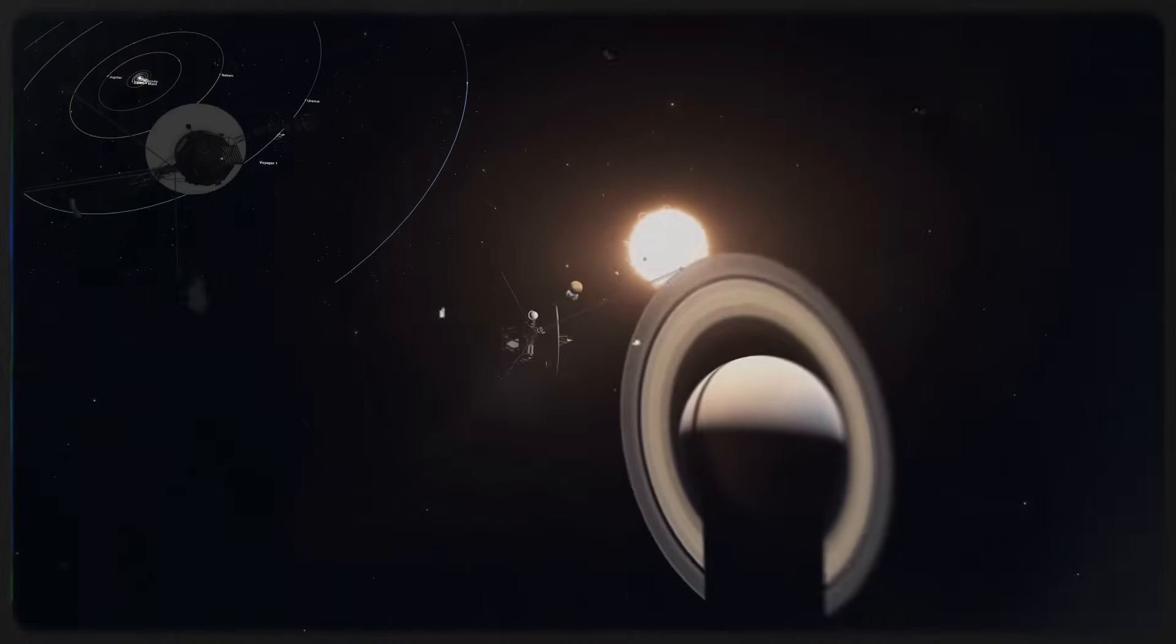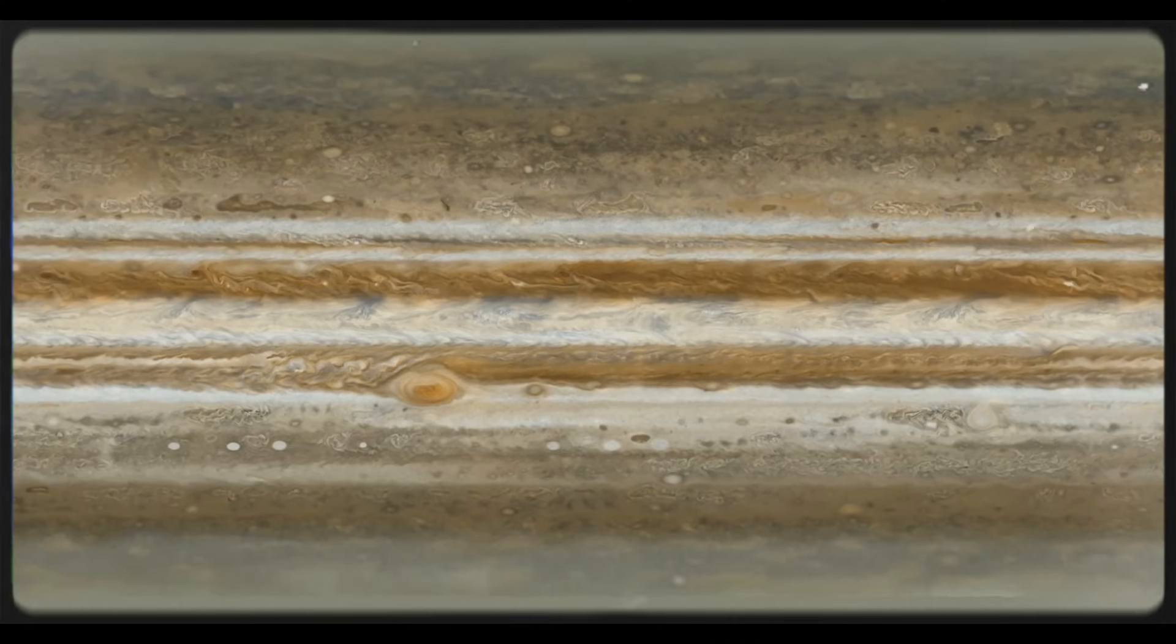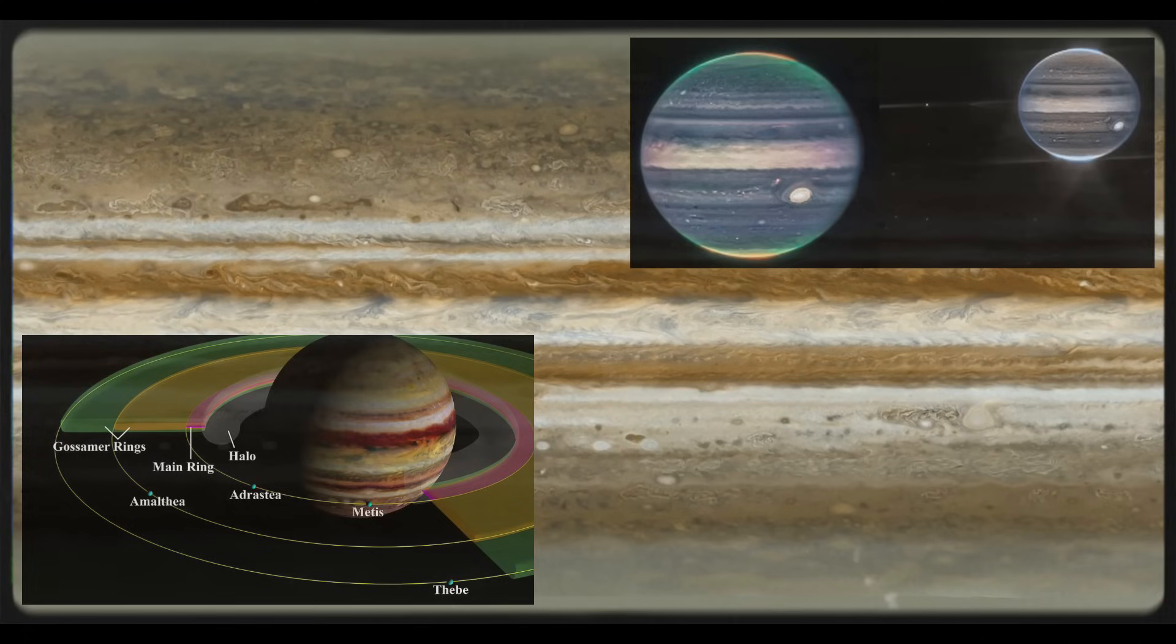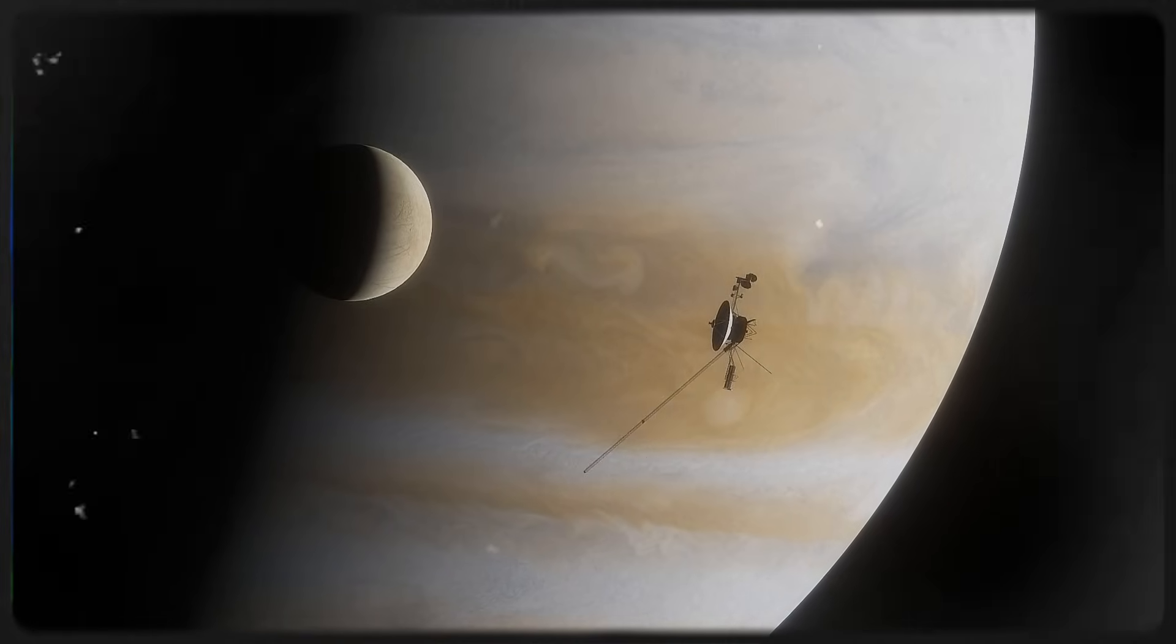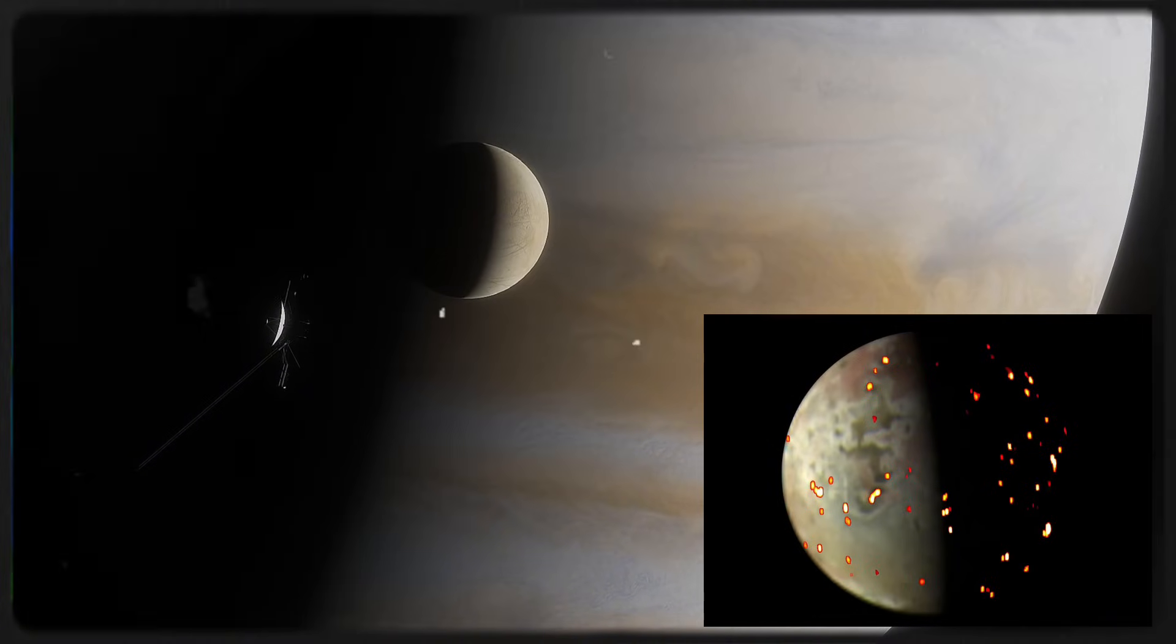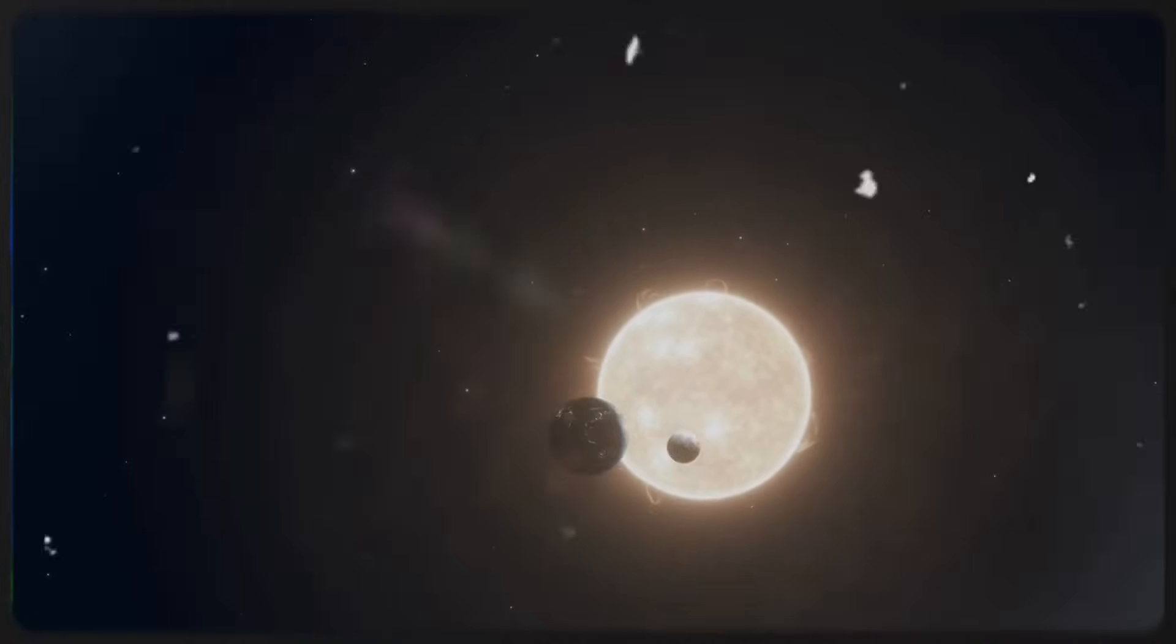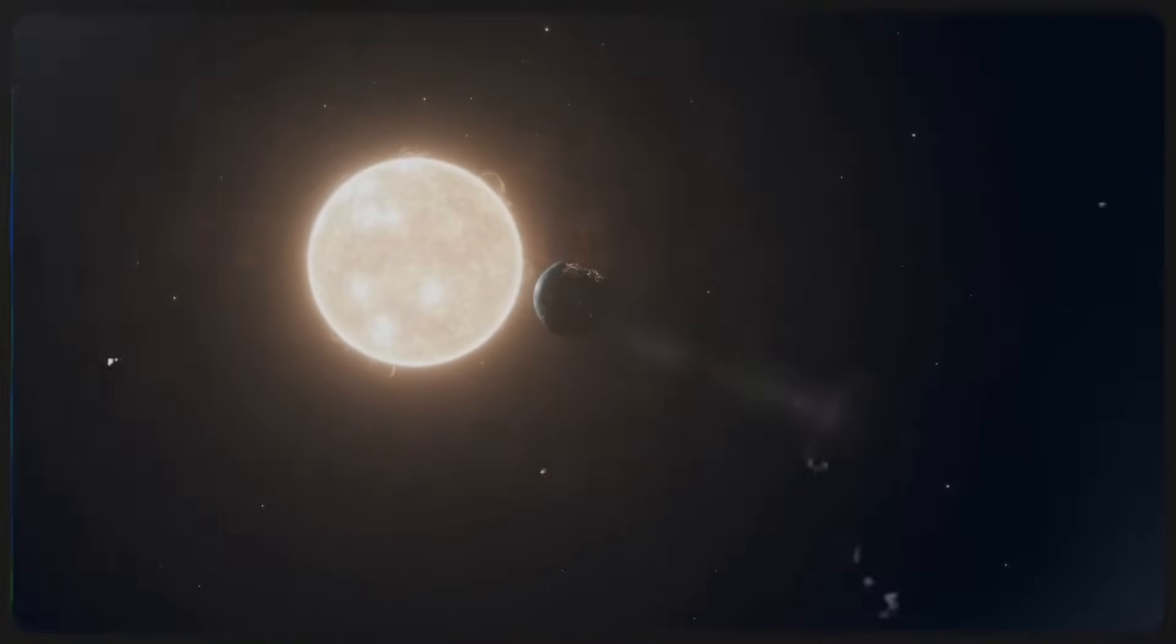In March 1979, Voyager 1 made its closest approach to Jupiter. The spacecraft's images unveiled the gas giant's swirling storms, complex atmosphere, and faint rings, providing humanity's first detailed view of Jupiter. But the discoveries didn't end there. Voyager 1 also captured volcanic activity on Io, one of Jupiter's moons, marking the first observation of active volcanoes beyond Earth. This unexpected finding demonstrated that moons in our solar system could be geologically active, reshaping scientists' understanding of volcanic processes.